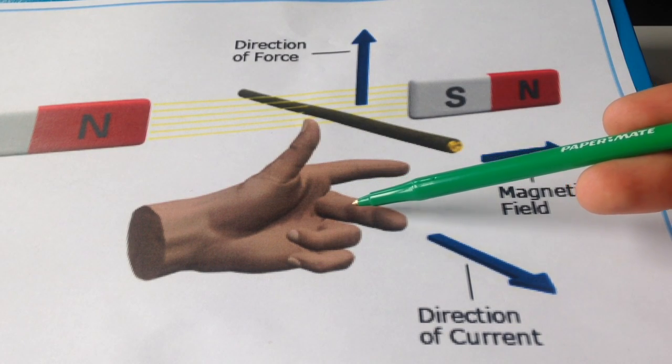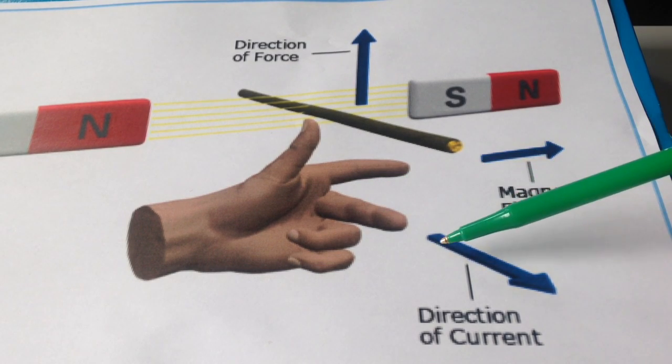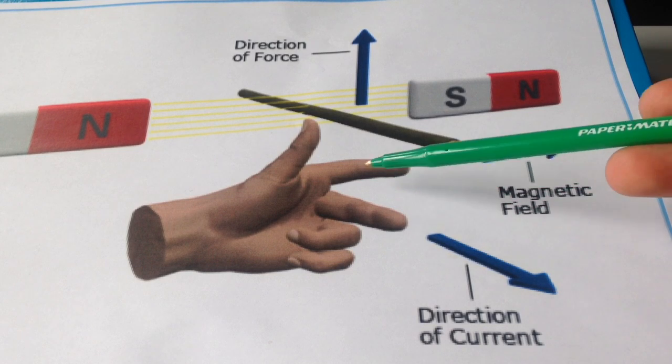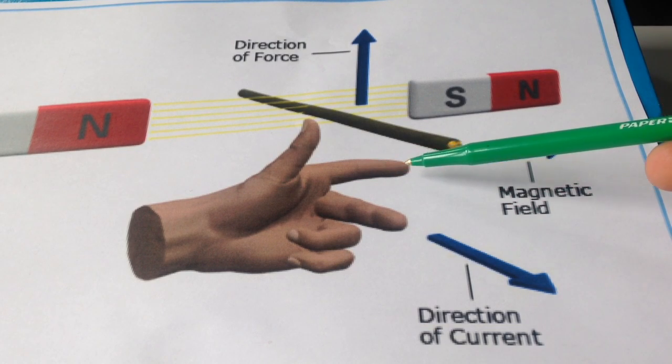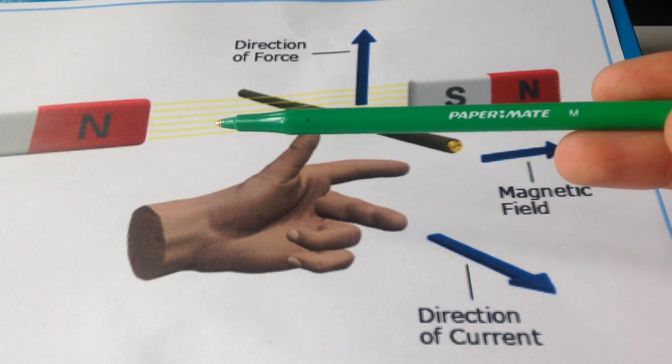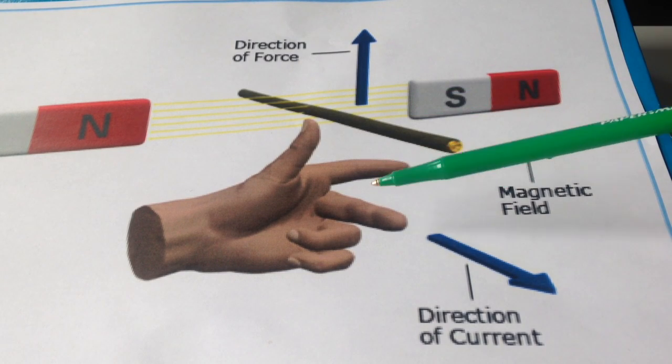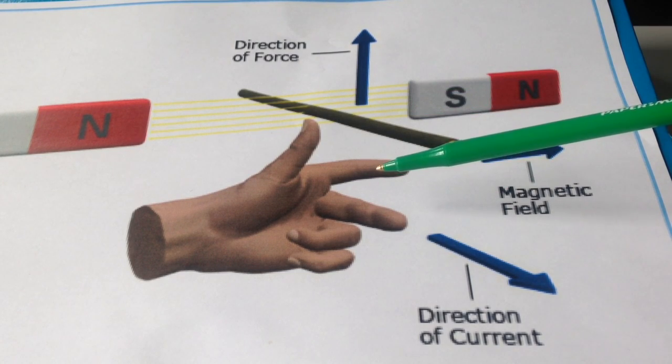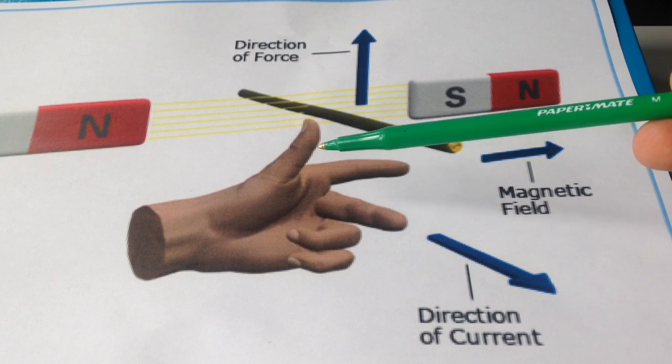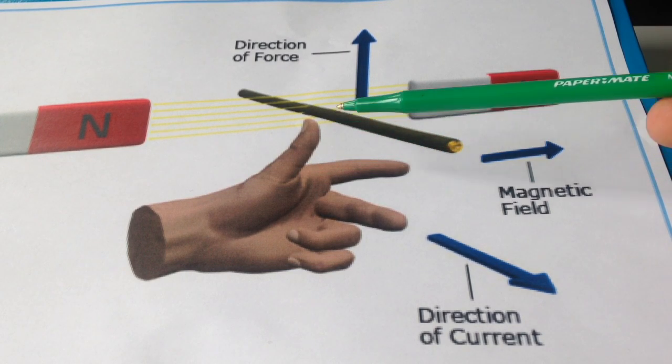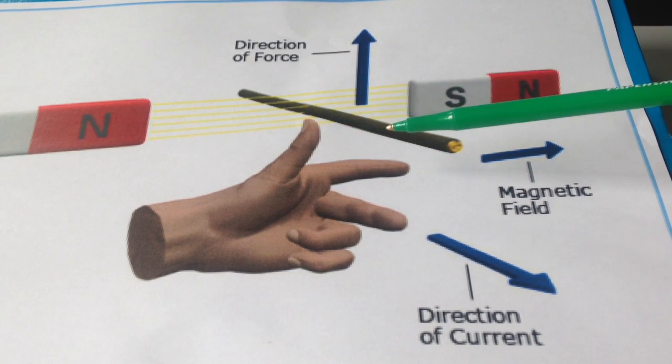where the second finger represents the direction the current flowing, and your first finger represents the direction of the magnetic field from north to south, your thumb will represent the direction of the force being exerted on the wire that's carrying that current.